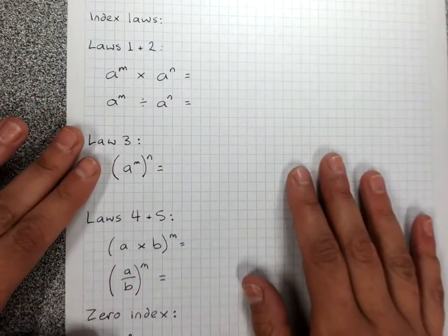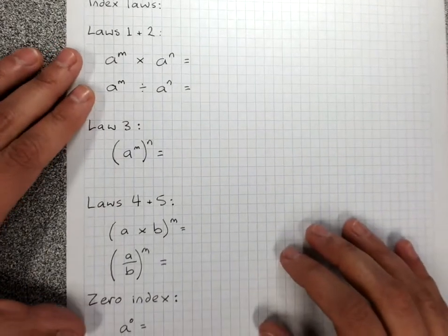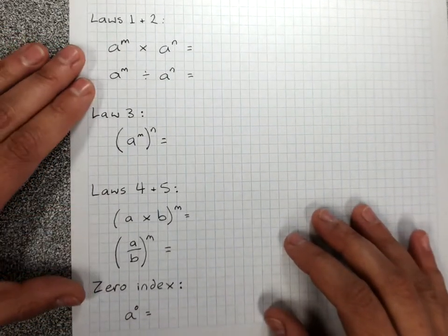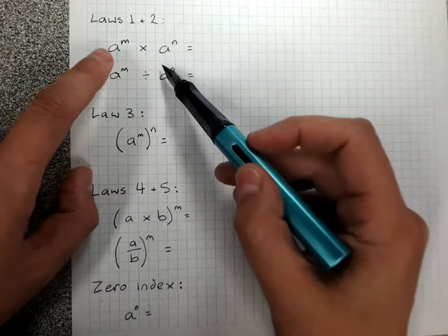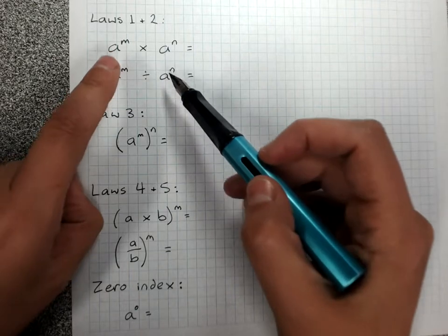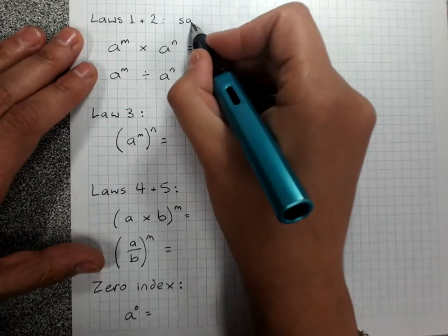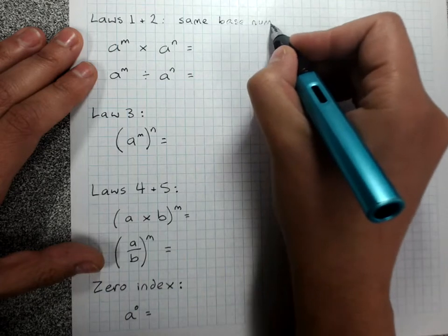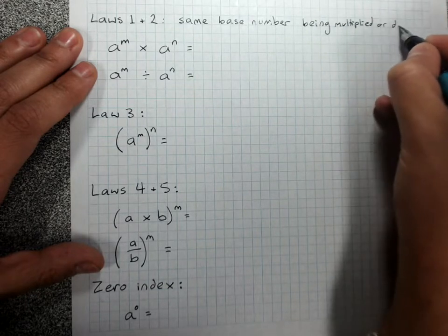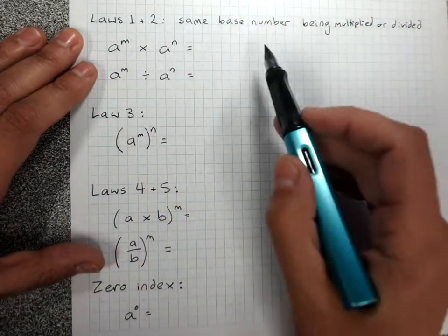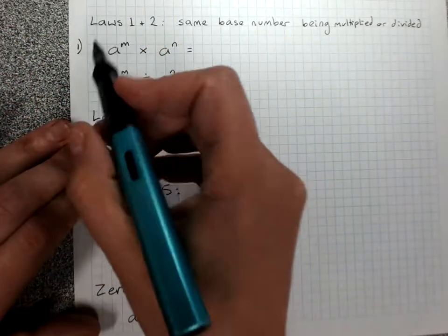My index laws are shortcuts — ways of dealing with multiplying and dividing things written in index notation, with powers. The first two index laws are illustrated when I've got the same base number and I'm multiplying or dividing two powers. Laws 1 and 2 work when I've got the same base number being multiplied (law 1) or divided (law 2).